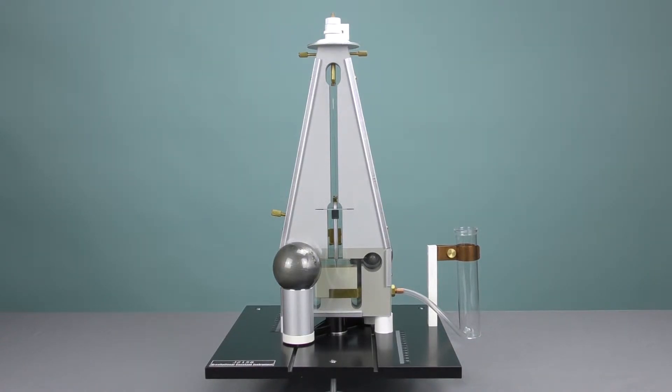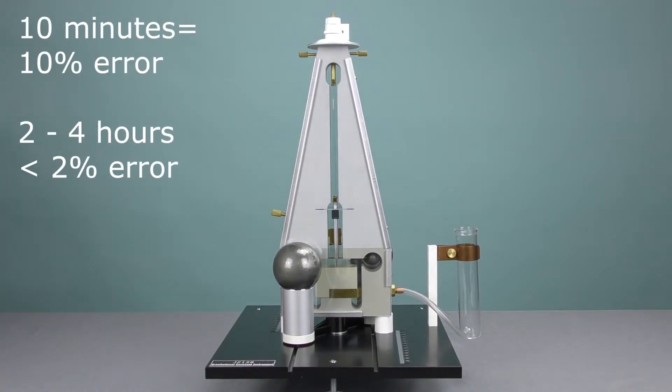The tradeoff for this quick method is ten minutes will give you better than ten percent accuracy, while the long experiment, up to four hours, will give you better than two percent accuracy.